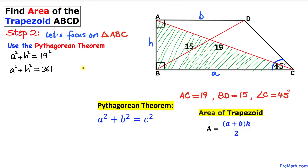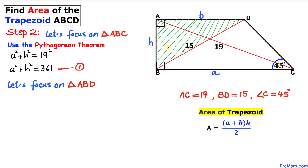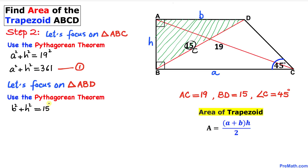Now let's focus on triangle ABD. This is also a right triangle, so we apply the Pythagorean theorem again. Here the hypotenuse BD is 15, giving us b² + H² = 15² = 225. We'll call this Equation 2.